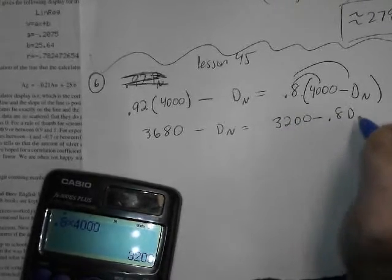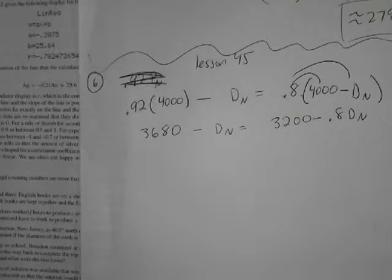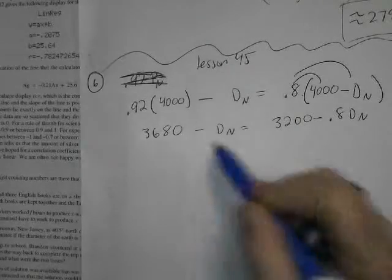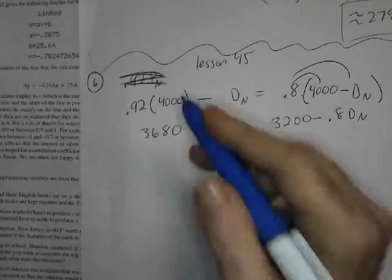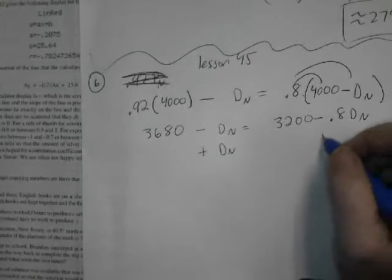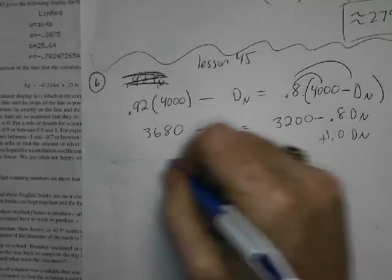Minus .8 times dumped in number. Okay, so then we just do, you know, I would like to probably add this to both sides. This is one dumped in number, because I don't like my variable to be, that's 1.0 dumped in number. I don't like my variable to be negative.